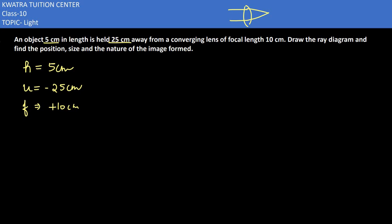To make the ray diagram, we need to find out v. How to find out v? You have to obviously use which formula? Lens formula. So you put u ki value, f ki value, and you'll get v. f is 10.